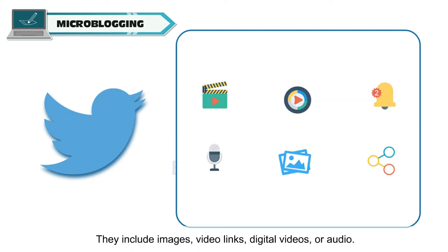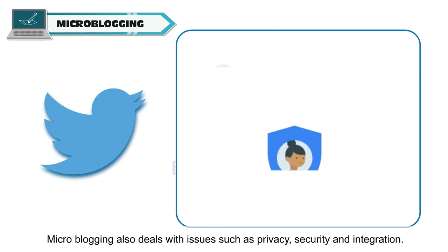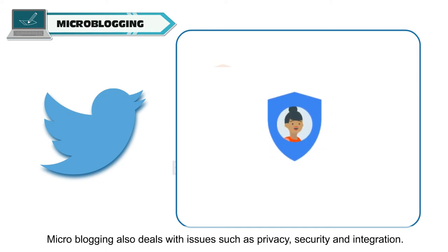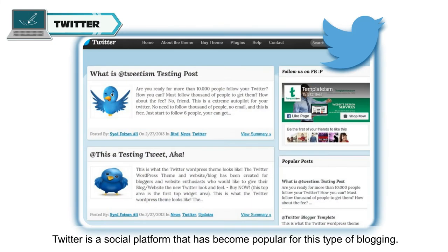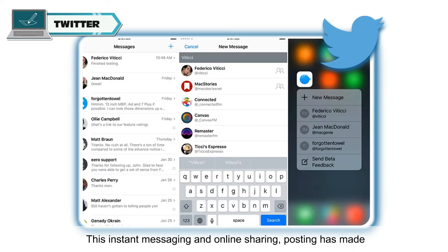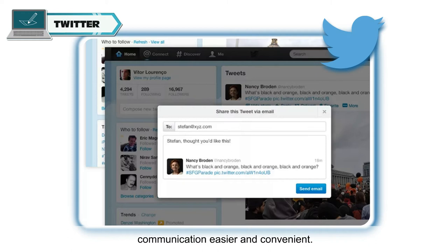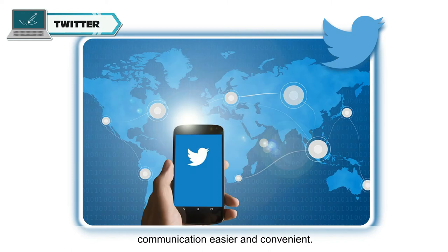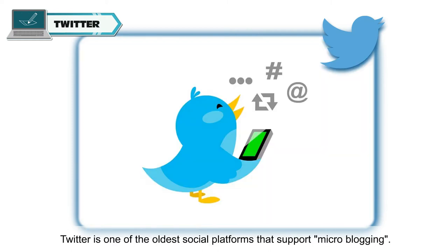Micro-blogs include images, video links, digital videos or audio. Micro-blogging also deals with issues such as privacy, security and integration. Twitter is one of the oldest social platforms that supports micro-blogging, and instant messaging and online sharing and posting has made communication easier and convenient.